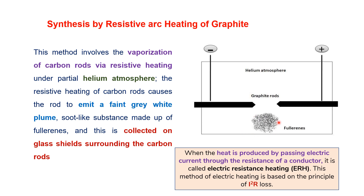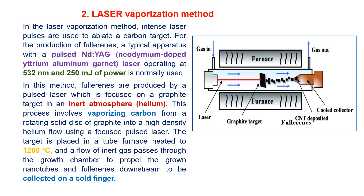The collected material was further studied for C60 and C70 content. The second method is laser vaporization, in which laser irradiation is used to ablate a carbon target. For the production of fullerenes, a typical setup uses a pulsed neodymium-yttrium aluminum garnet (Nd:YAG) laser operating at 532 nanometers.